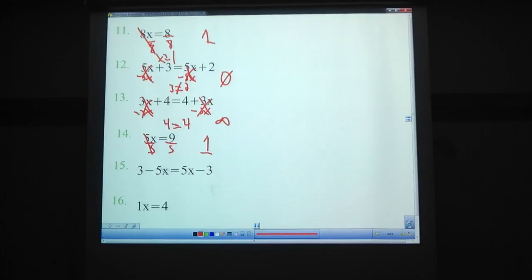15. This is what throws people off the most. We can add 5X to each side. Giving you 3 equals 10X minus 3. We can actually finish solving that, giving us one solution. As soon as you can get to where all the unknowns are on one side of the equation, there's one solution. 16. 1 times X is X. So 16, X equals 4. One solution.